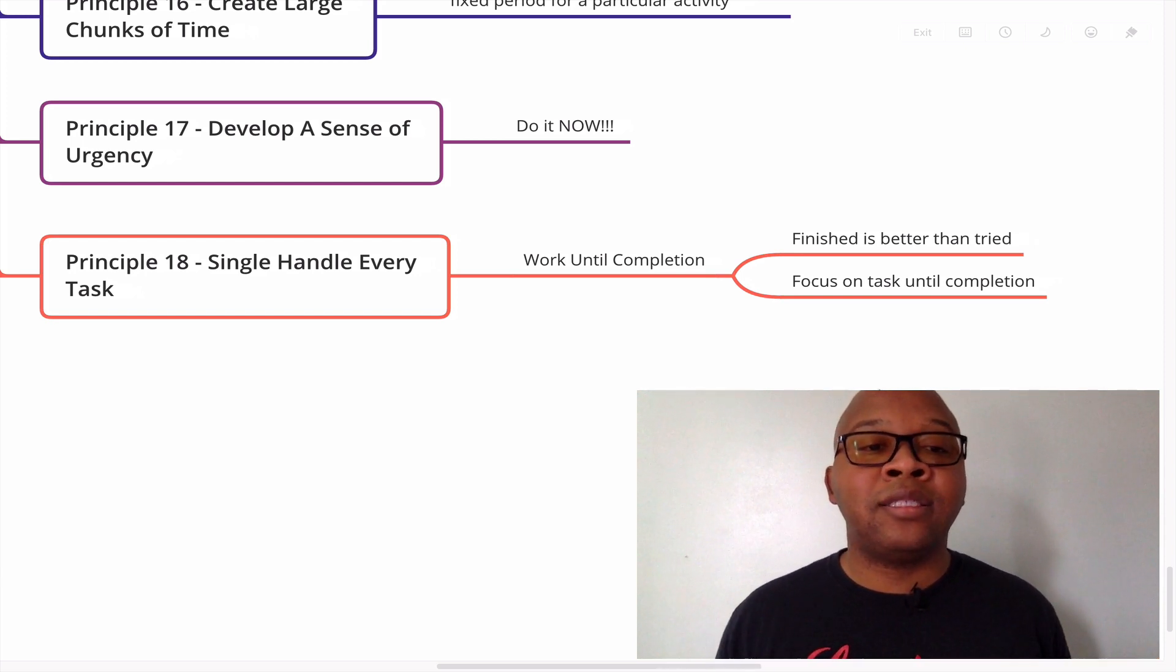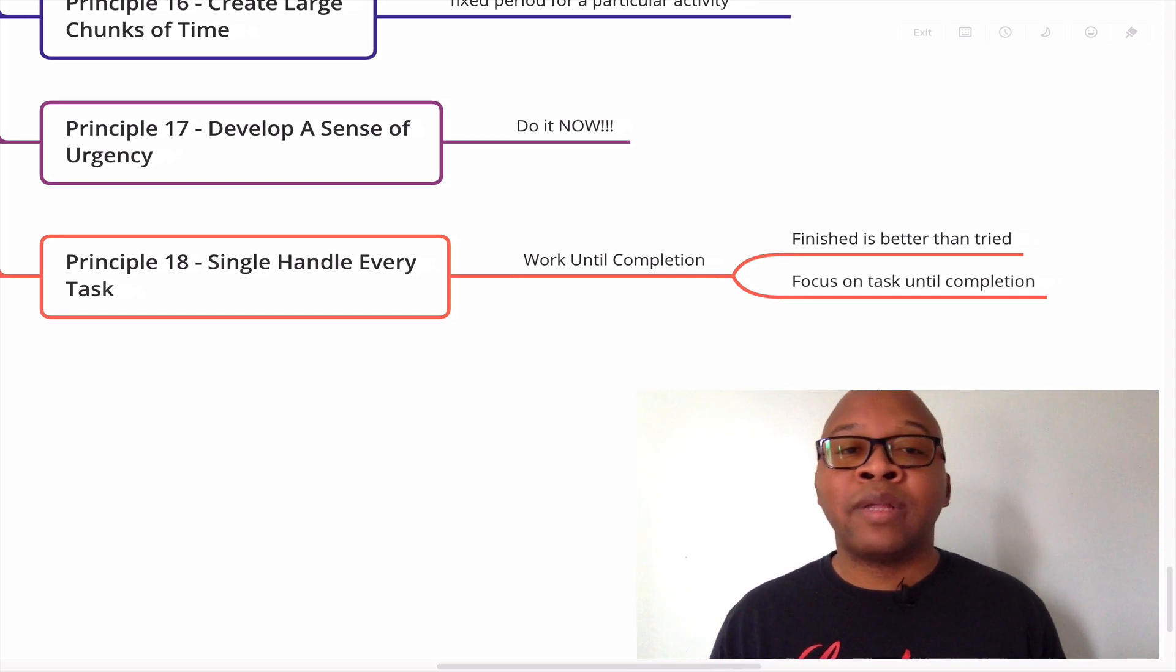And then principle 18 is single handle every task. And what that is, is to work until completion. Finished is better than tried. Many people say, I tried to start a business. I tried to work on this business plan. I tried to do this and tried to do that. But the goal is not to try. The goal is to do. To just continually work on it until completion. Give 100% of your attention on it. And then you will get the work done.